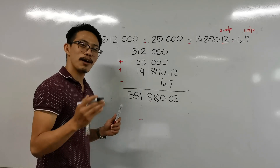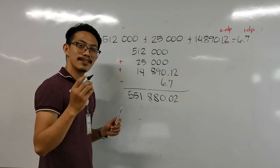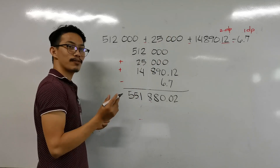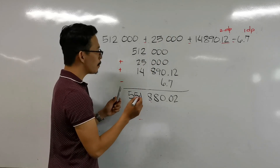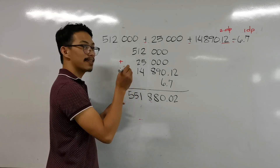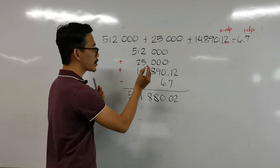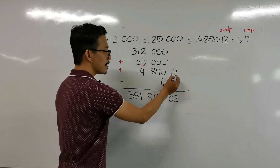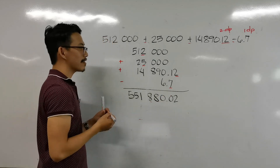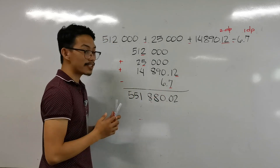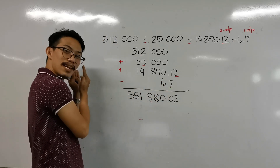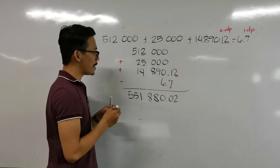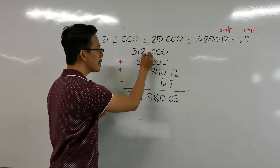What would be our final answer? Our answer must only contain the least precise measurement. Since we cannot use the decimal-place trick, we identify the last significant digit of each measurement and determine which of those is the farthest to the left. In this case, the 5 in 512,000 and the 2 in 25,000 are the farthest to the left, so we put a line at that position — our answer must only go up to the thousands place.